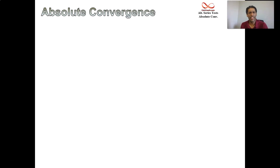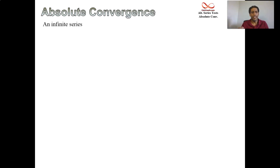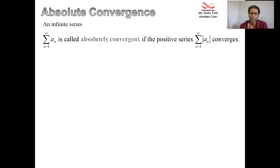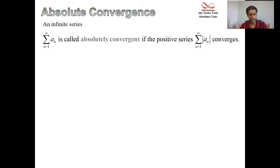Hello, welcome to this video discussing absolute convergence and also conditional convergence and the difference between them. It turns out that an infinite series is called absolutely convergent if when you make all the terms positive and add them up and you end up with a convergent series — that's a stronger type of convergence, we put the tag absolute convergence on it.